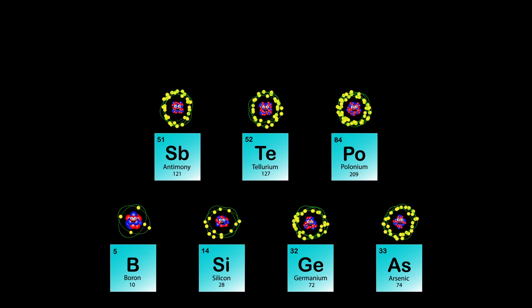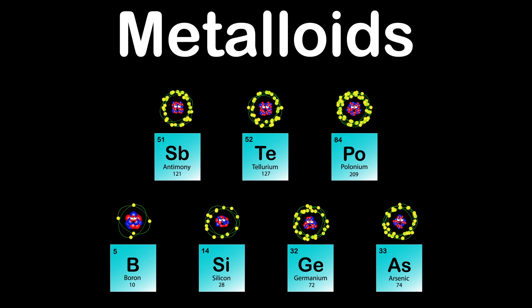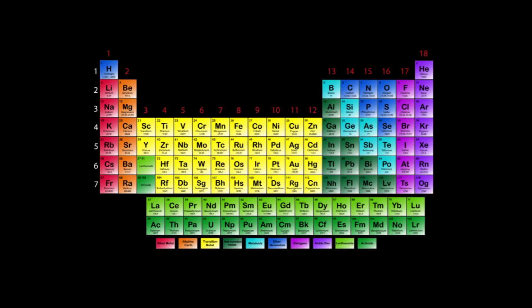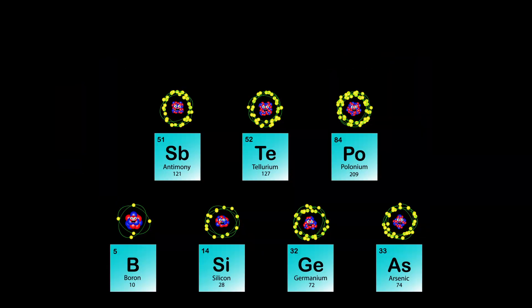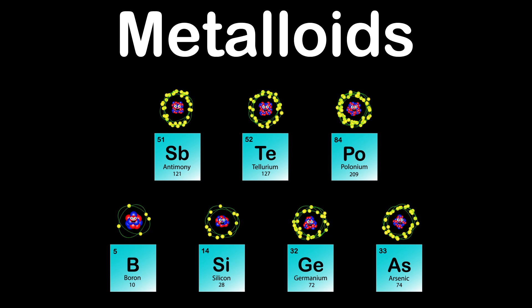We are the Metalloids of the Periodic Table. Groups 13 through 16 and periods 2 through 6 is where you find us in the Periodic Table Mix. We are the Metalloids of the Periodic Table.